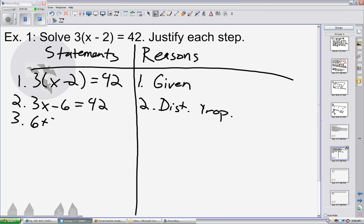Next, to get x by itself, we have to add 6 to both sides. Since we added 6 to both sides, this is the addition property.